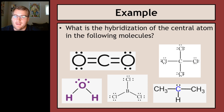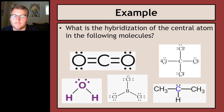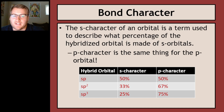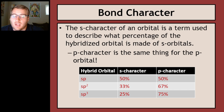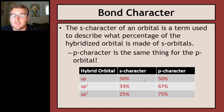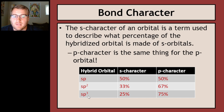Along with hybridization, we have bond character — the s character and the p character of a hybridized orbital. It's basically what percentage of your new blended orbital comes from the s sublevel versus the p sublevel. The sp orbital is made of one s and one p, so it's 50% s character and 50% p character. The sp2 orbital is made of one s and two p's — 33% s character and 67% p character. An sp3 hybridized atom is 25% s character and 75% p character because there's one s and three p's.